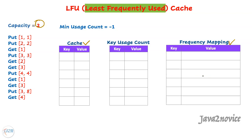If we want to reduce code or use the language-provided linked list as-is, we don't need to maintain node objects — we can simply store raw values into this hash map. In such cases, how can we maintain key usage count? This is why we need another hash map to maintain key usage count. Here the key will be the cache key and the value will be the usage count.